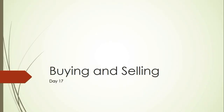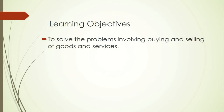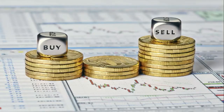Welcome to the video lessons for today. I'm going to discuss buying and selling of goods and services. Our learning objective is to solve problems involving buying and selling of goods and services. In business, in order for you to earn, you need to buy something — for example, in creating a product you are going to buy raw materials or buy finished goods and sell it to earn an income.